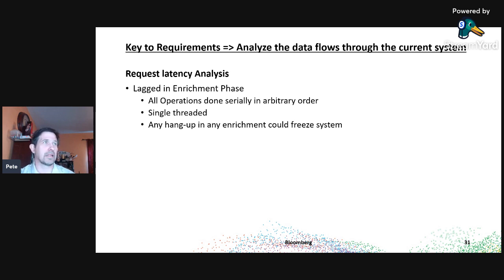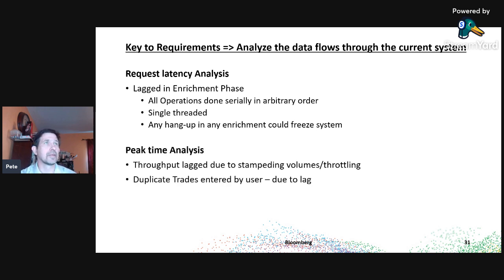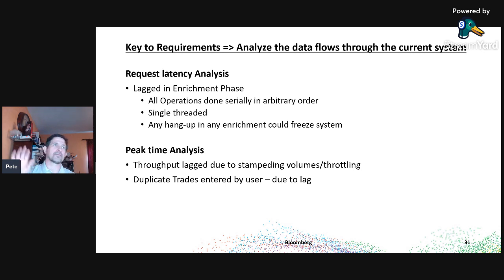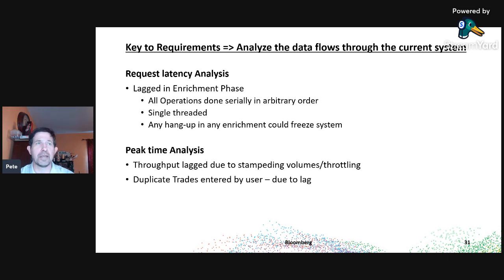By looking at the data, I could see freeze-ups were happening in the enrichment phase. When I looked at the tickets, there were complaints about freeze-ups that I hadn't originally been told about. Looking at the peak time analysis, the throughput also lagged due to what I call stampeding volumes or truffling — at market close, there were three sources of data, and source C was seen as the direct premium feed that had to be kept free.